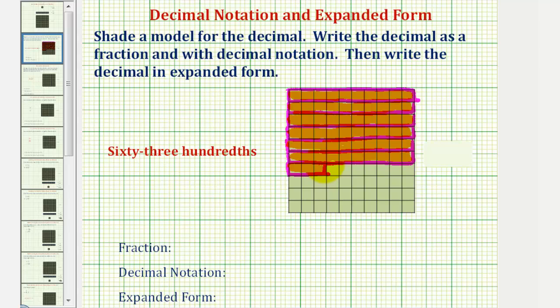And now let's write the fraction for this model. Let's start with our denominator. Because the ten by ten grid cut or denominates one whole into one hundred equal partitions, the denominator is one hundred. And because we counted or enumerated 63 of those partitions, our numerator is 63. This is 63 hundredths as a fraction.